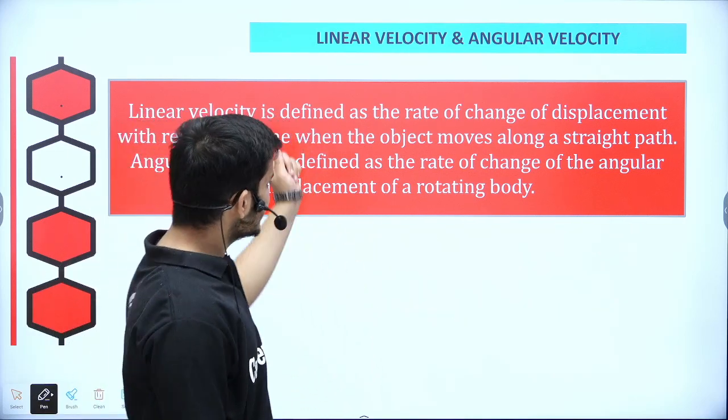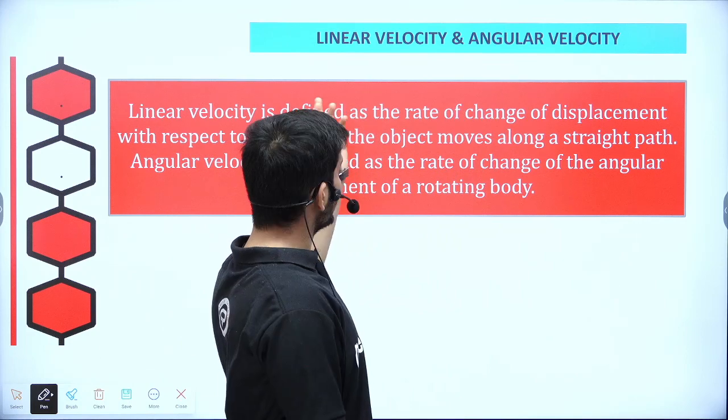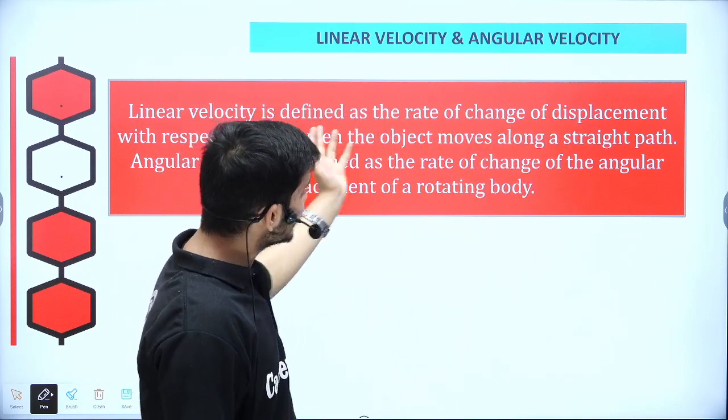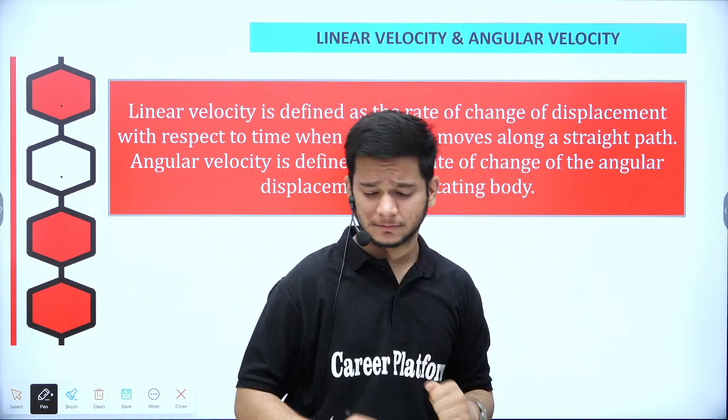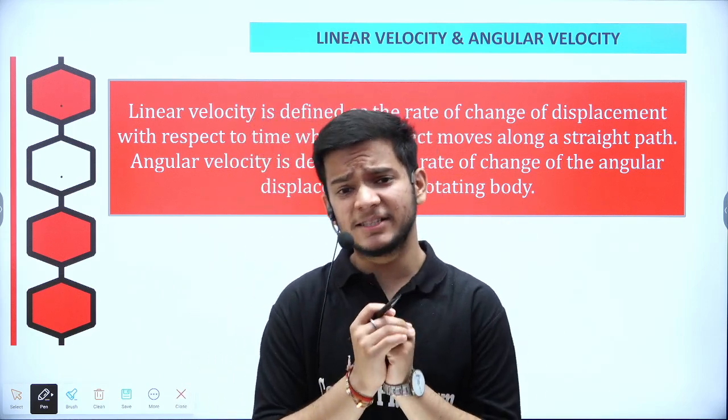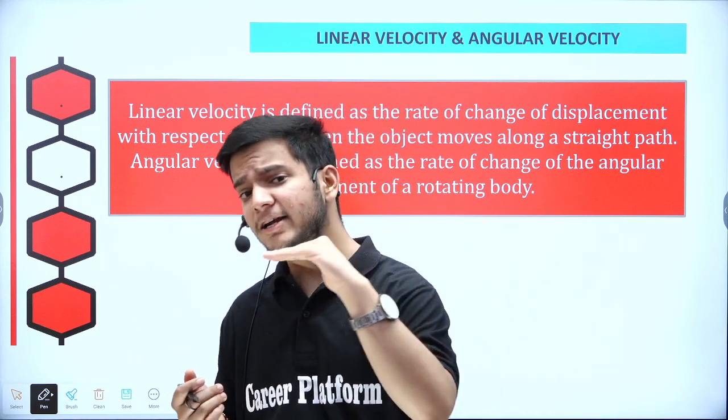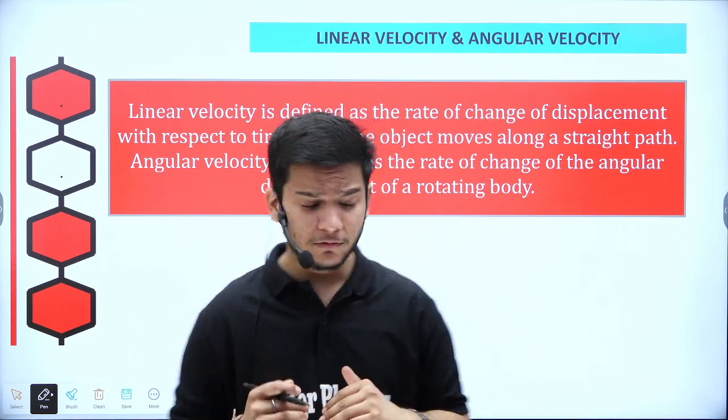Linear velocity is defined as the rate of change of displacement with respect to time when the object moves along a straight path. So when I consider linear velocity, when I consider the object, which is the body which is linearly moving.